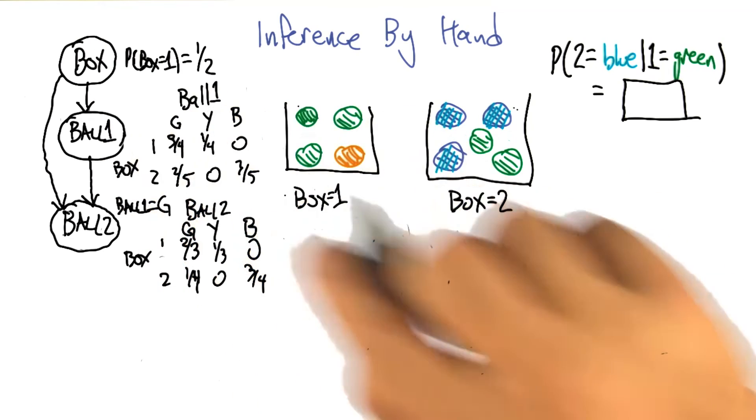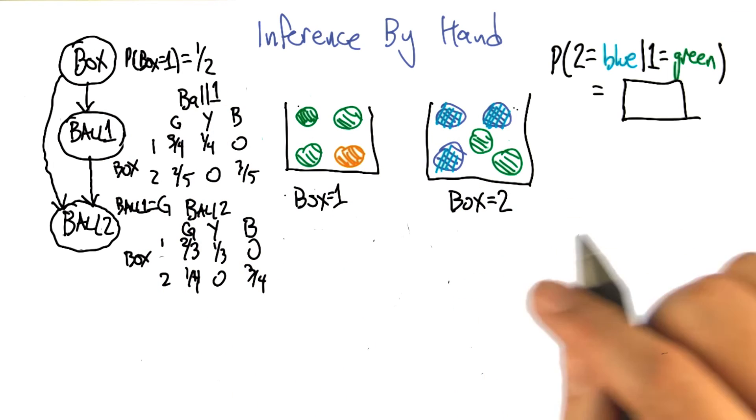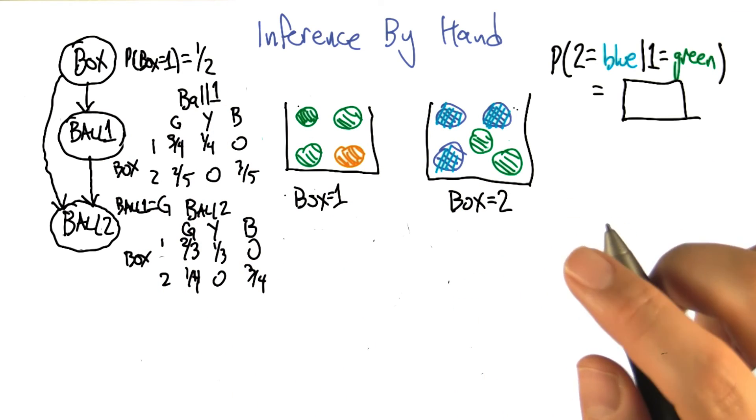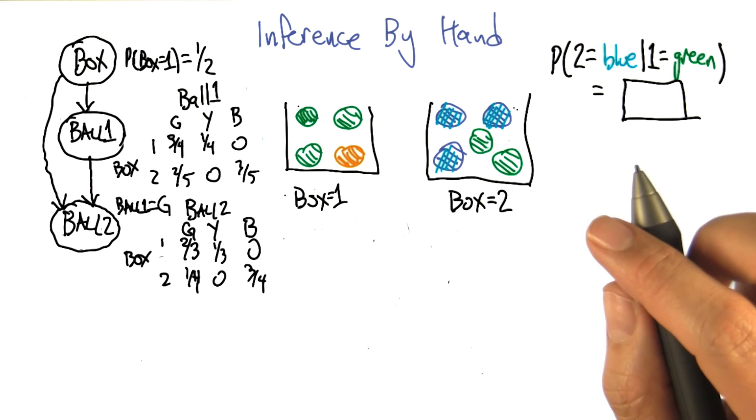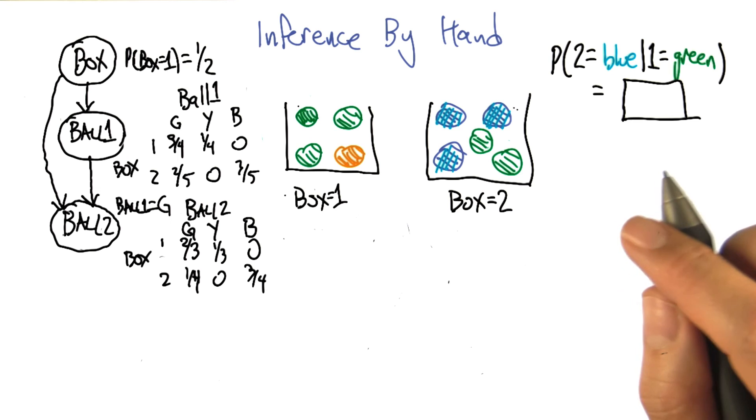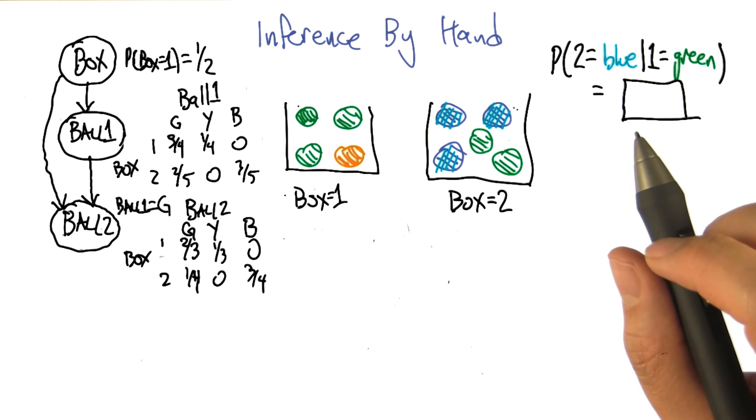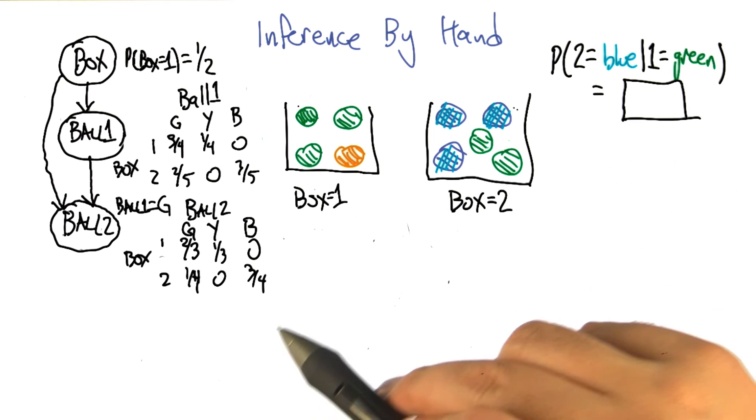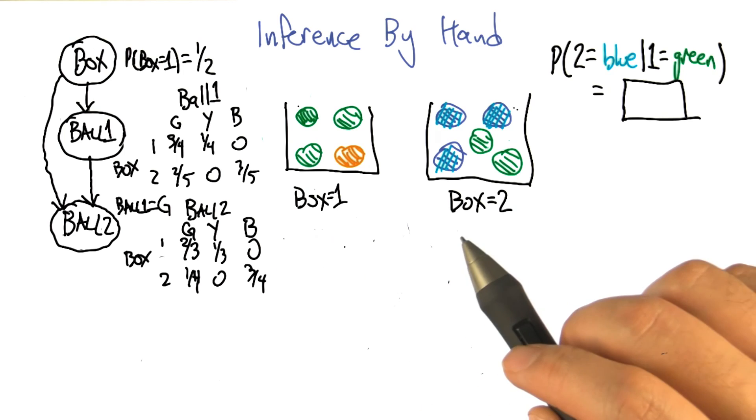All right, so now that we've written it as a Bayes net, is that helpful at all? So what we're, we haven't asked the question yet, so maybe it's time to ask the question and then we can work on the answer. Okay. All right, the question is, what's the probability that the second draw is blue, given that the first draw had been green? Go.